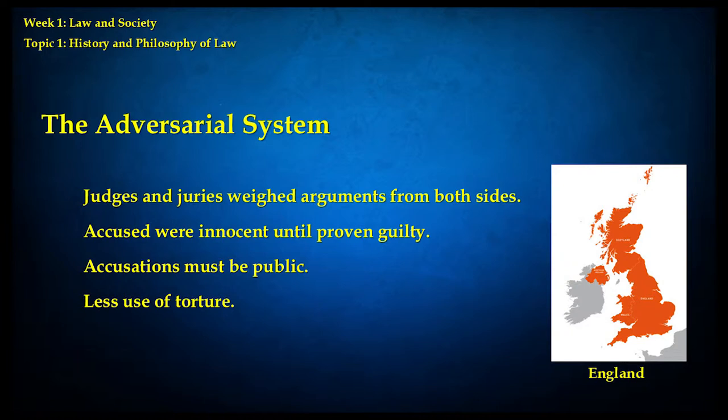In this system, the accused were innocent until proven guilty. The idea was it was better to let a guilty person go free than to accidentally punish an innocent person, so the burden of proof was on the court. Accusations also were made publicly — people knew what they were being accused of and who was accusing them, so they could come up with an argument to defend themselves. And in England, there was less use of torture, though not none — the Middle Ages were a pretty rough time.